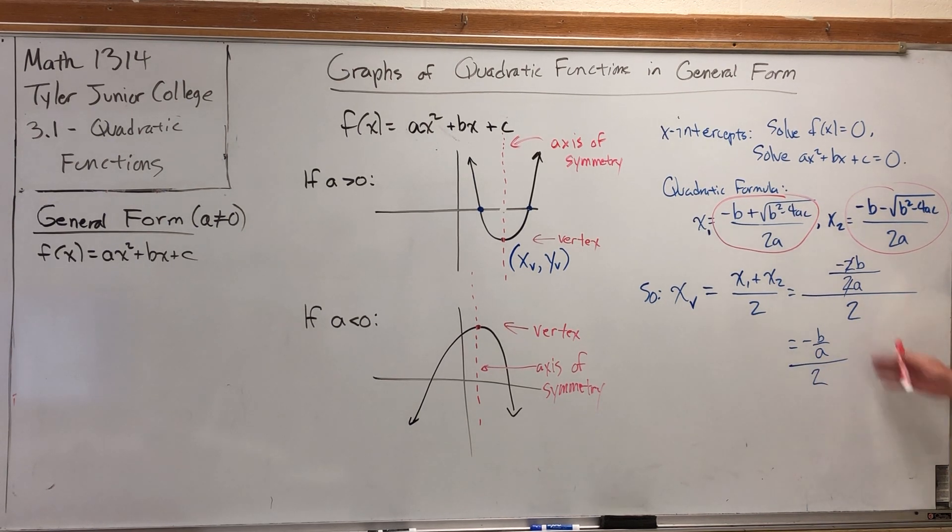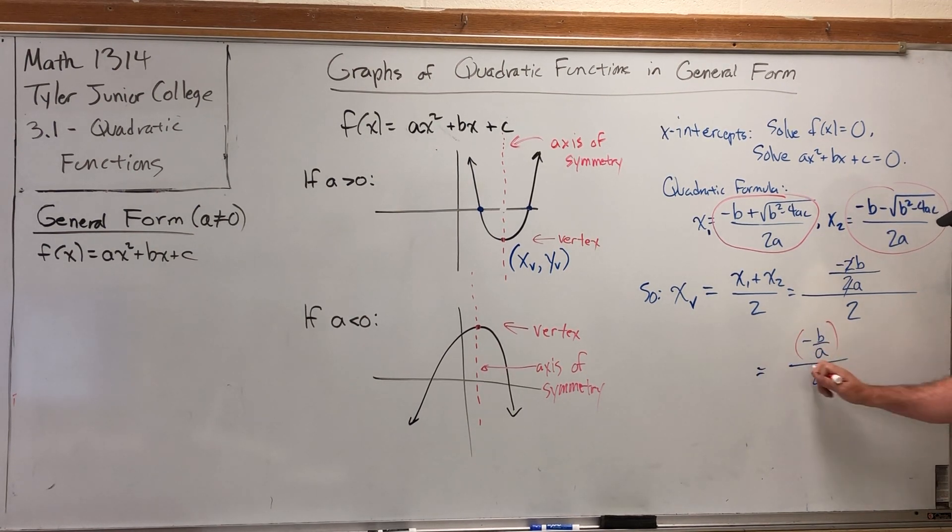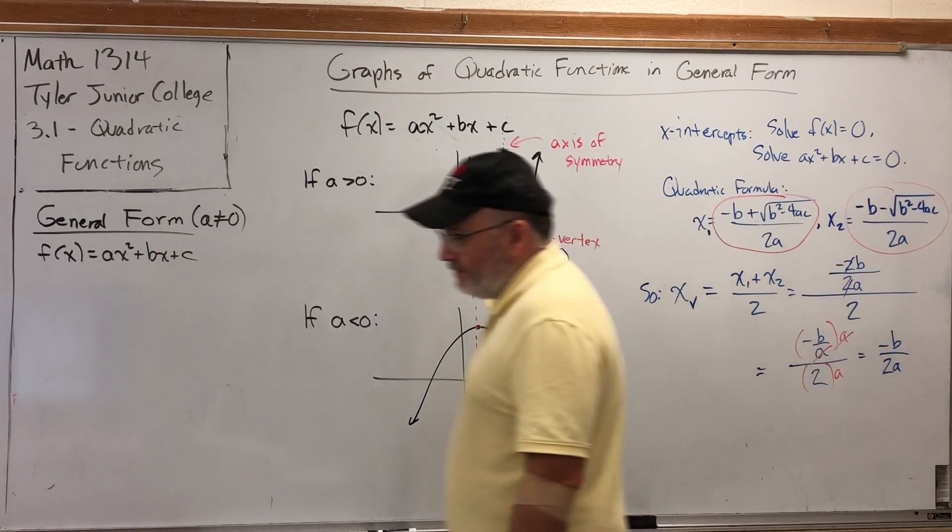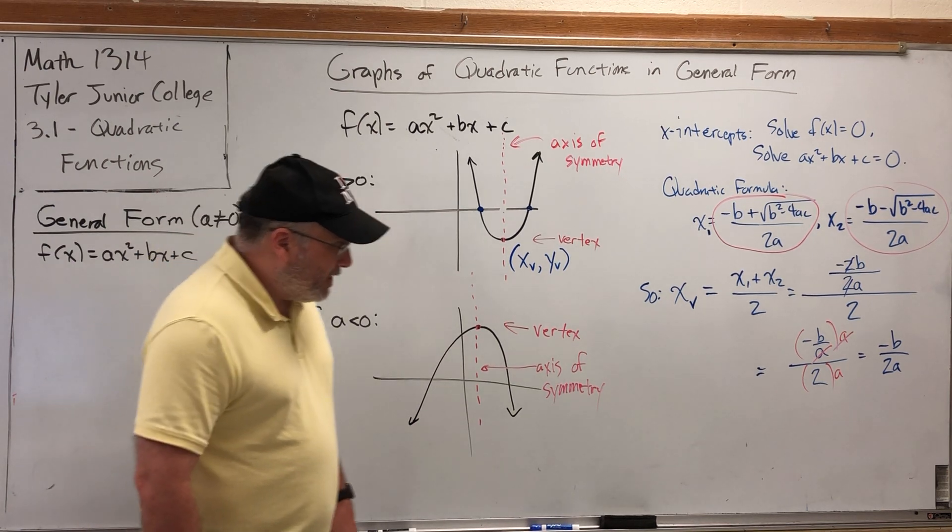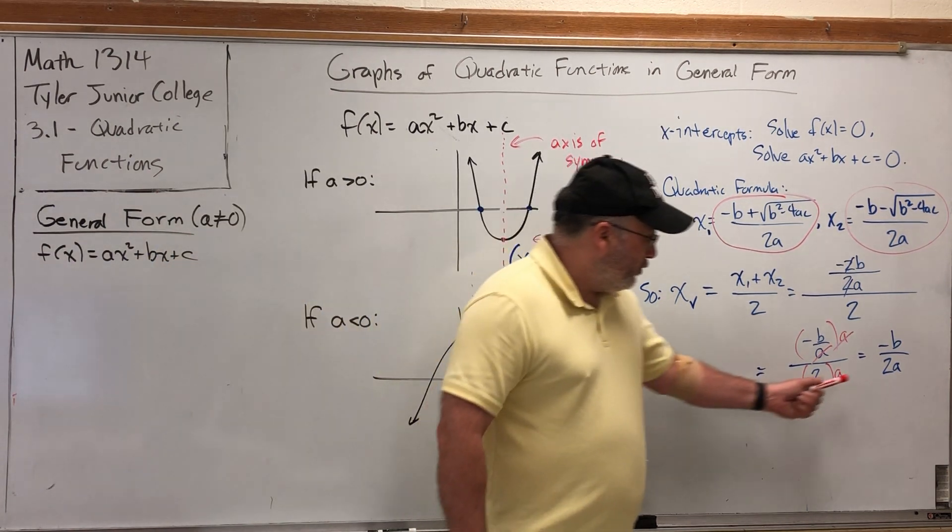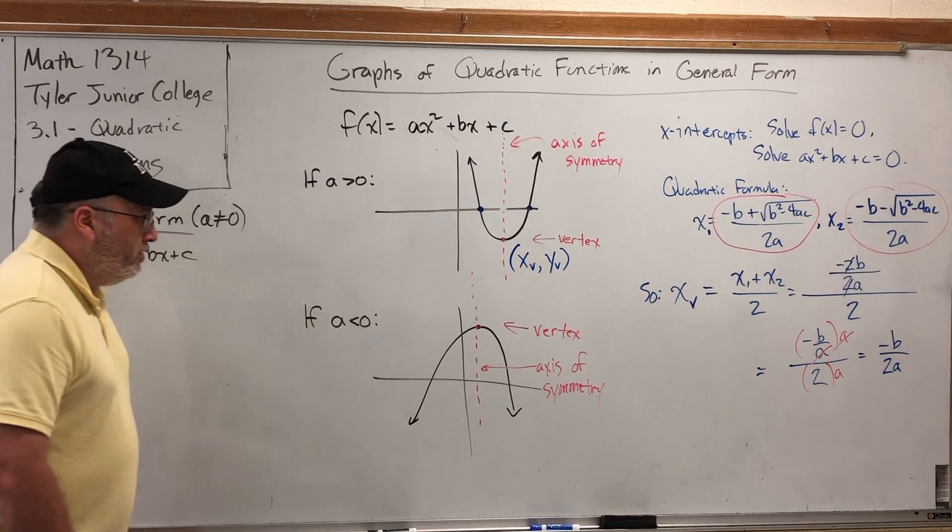But how do we deal with this over 2? One way is to multiply both numerator and denominator, giving -b on top and 2a on the bottom. That's as simple as it's going to get. So by analyzing the geometric aspects of the parabola, we just came up with a pretty simple formula to calculate the vertex x-coordinate.